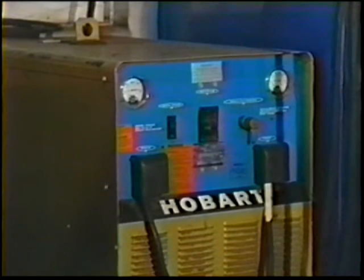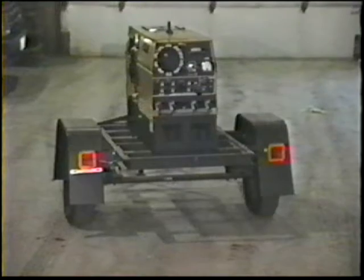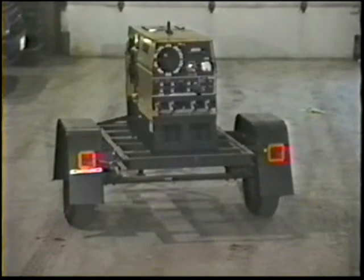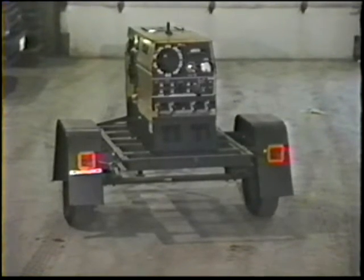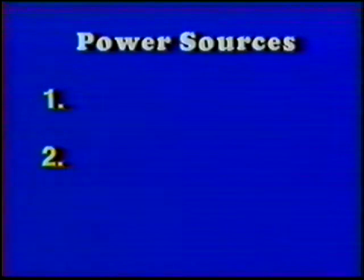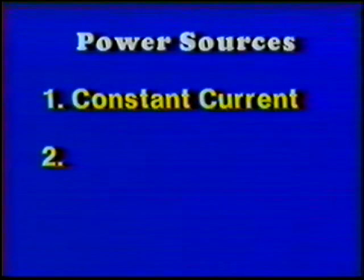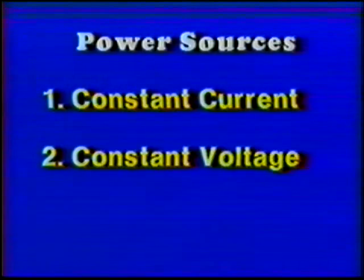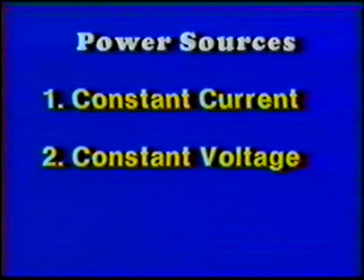There are two basic types of power sources available for arc welding: the constant current and the constant voltage.